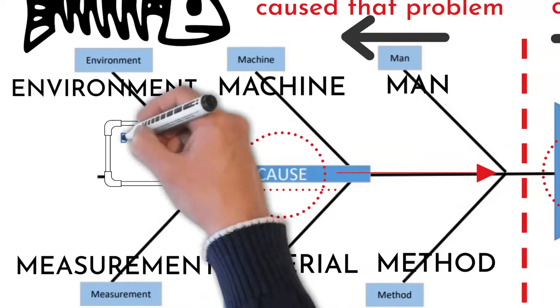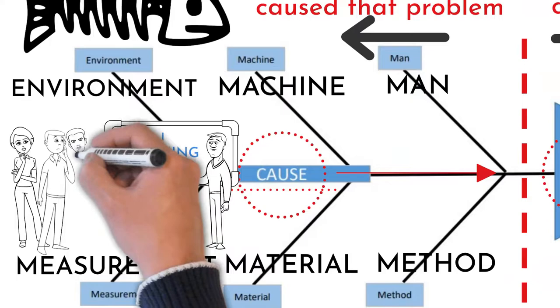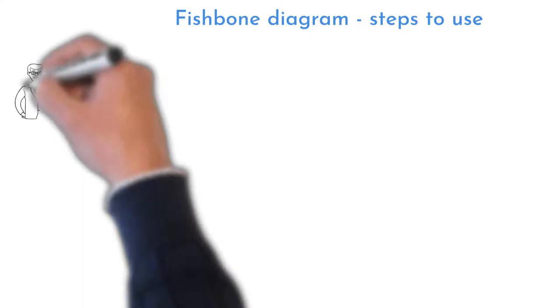Fish Bone Diagrams strongly support brainstorming and discussions about a problem or effect. Usually is used during project analysis phase, but not limited for that.